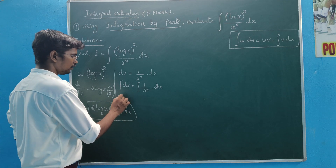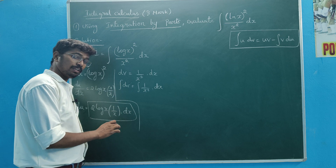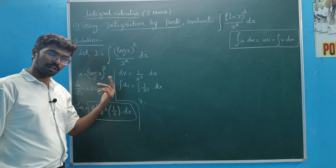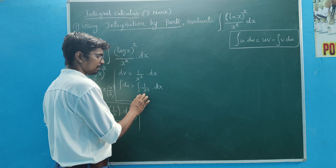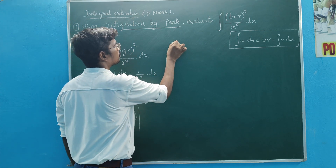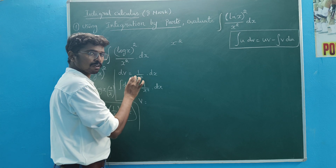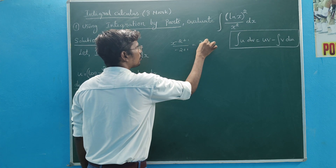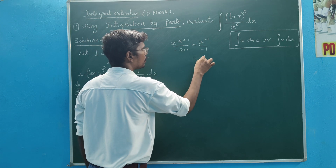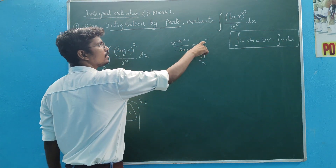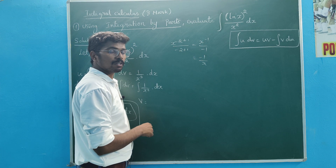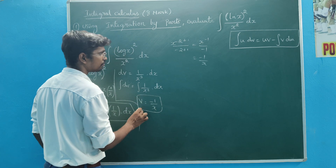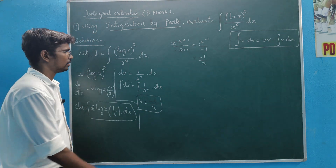This is du, and that is dv, which we will do. Then we will do dv. Integral upon v: dv is x power minus 2. Then x power minus 2 — power add and divide. Then add x power minus 1 divided by minus 1. Then x power minus 1 divided by minus 1, giving minus 1 by x.